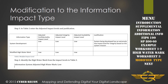In this example, the system development information type is being modified for an integrity impact level of low, with a justification that the system being developed has an extremely low impact level for integrity based on the system mission. This modification would have to be approved by the authorizing official, but if approved, it would change the system's high watermark from low-moderate-low to low-low-low, or an overall high watermark of low.